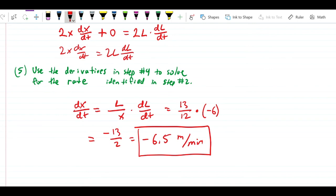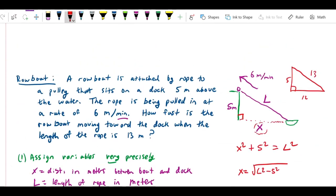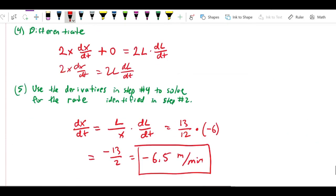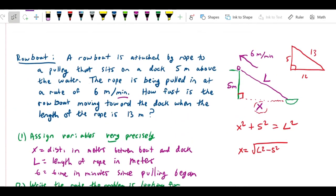So, what that means is we see that the rate of change is negative 6.5 meters per minute. By the way, this came out negative, of course, because we know that the distance is getting shorter. This is dx/dt. We can see that if the rope is getting shorter, it's pulling the boat toward the dock. So, it makes sense that this number x is actually getting smaller. So, that's why we get a negative number for dx/dt, because x is getting smaller.